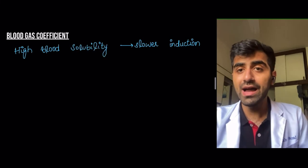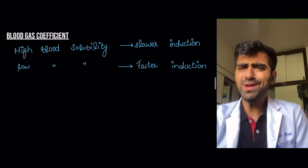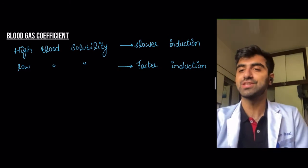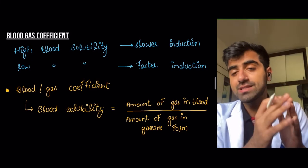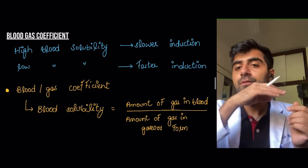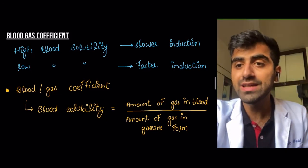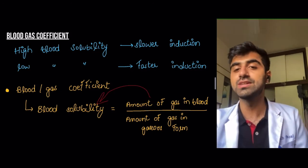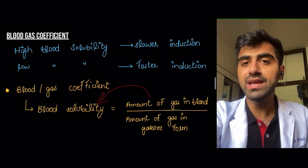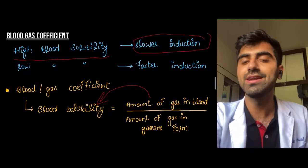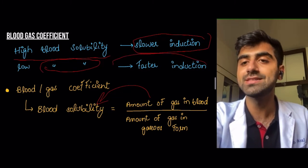To summarize: highly blood soluble means slower induction; low blood soluble means faster induction. Blood gas coefficient is simply your blood solubility — it's the amount of gas dissolved in blood divided by the amount of gas present in its original gaseous form. A higher blood gas coefficient means higher blood solubility and slower induction time. A lower blood gas coefficient means lower blood solubility and a faster induction time.